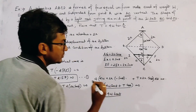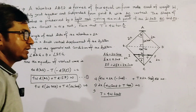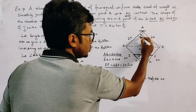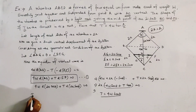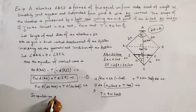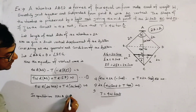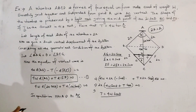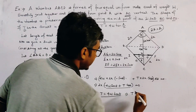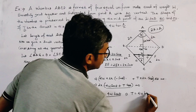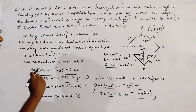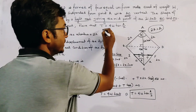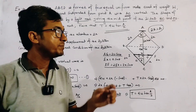In the equilibrium position, the angle at vertex A is 2·theta = A, so theta = A/2. Substituting into T = 4w·tan(theta), we get T = 4w·tan(A/2). This is the thrust in the rod, which is the required result. This is a simple but interesting problem of virtual work.